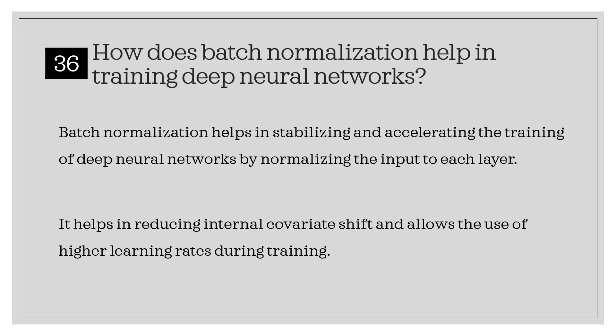How does batch normalization help in training deep neural networks? Batch normalization helps in stabilizing and accelerating the training of deep neural networks by normalizing the input to each layer. It helps in reducing internal covariate shift and allows the use of higher learning rates during training.